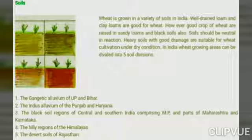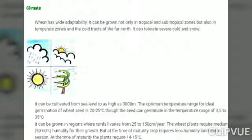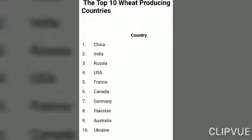Wheat has wide adaptability — it can be grown not only in tropical and subtropical zones but also in the temperate zone. It can tolerate cold and snow and can be cultivated from sea level to 3000 meters altitude. The optimum temperature range for germination of wheat seeds is 20°C to 25°C.